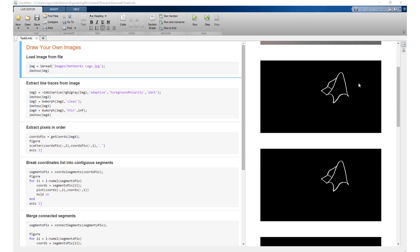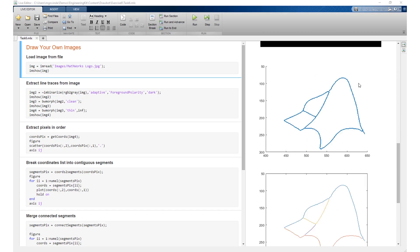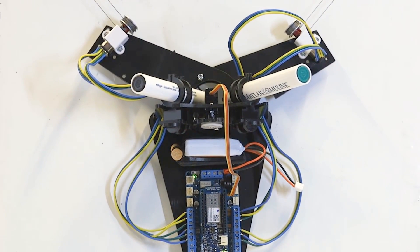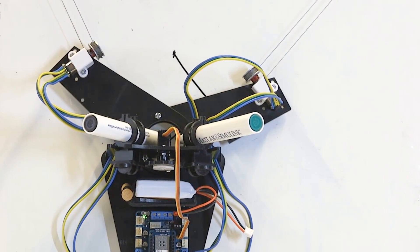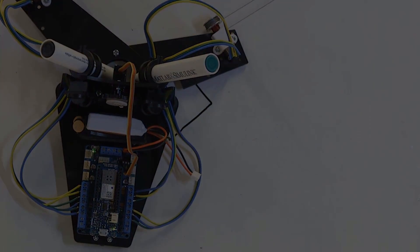For the drawing robot, MATLAB's math and image processing routines were used to convert images into a series of line segments that the robot needs to draw. After calculating where the markers should move, MATLAB controls the DC motors accordingly to draw the image on a whiteboard.